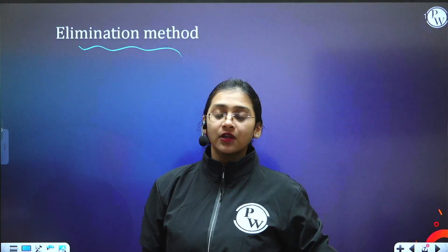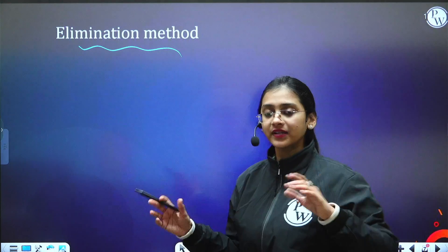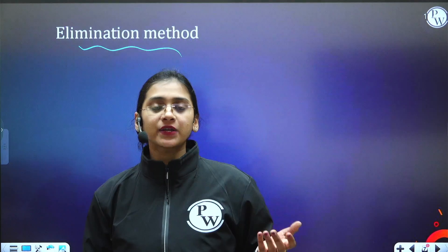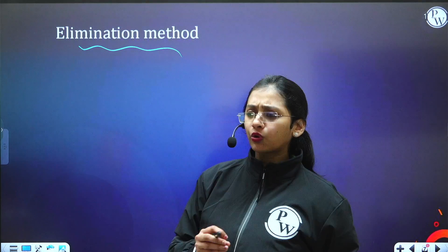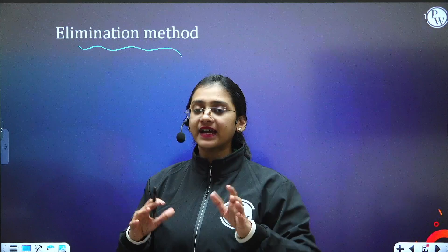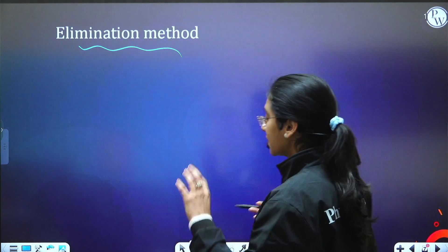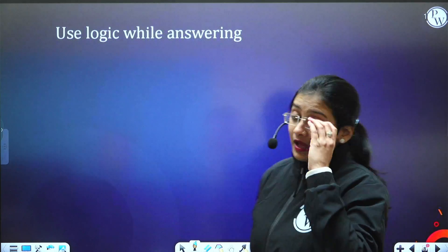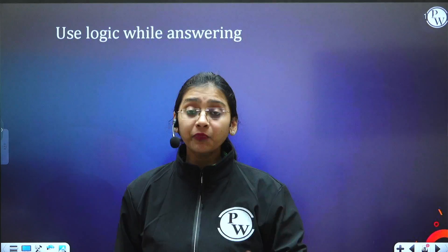If you have no idea about a question, you can eliminate options based on the values — if an option is too low compared to the others, or if it is too high, you can eliminate it. That is the core of the elimination method.